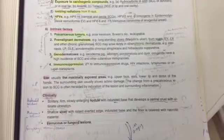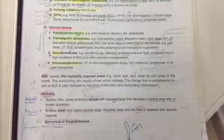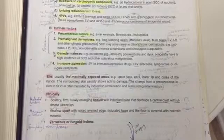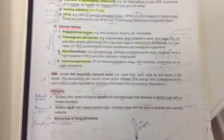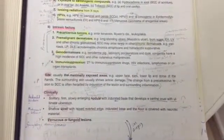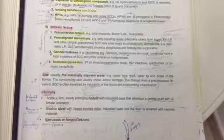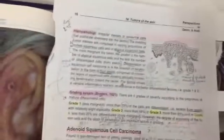The indurated nodule is solitary, firm, slowly enlarging nodule with indurated base that develops central crust with ultimate ulceration. Shallow ulcer with raised averted edge, indurated base, and necrotic floor, or verrucous or fungating mass. After that, we will take a biopsy and see the histopathology.